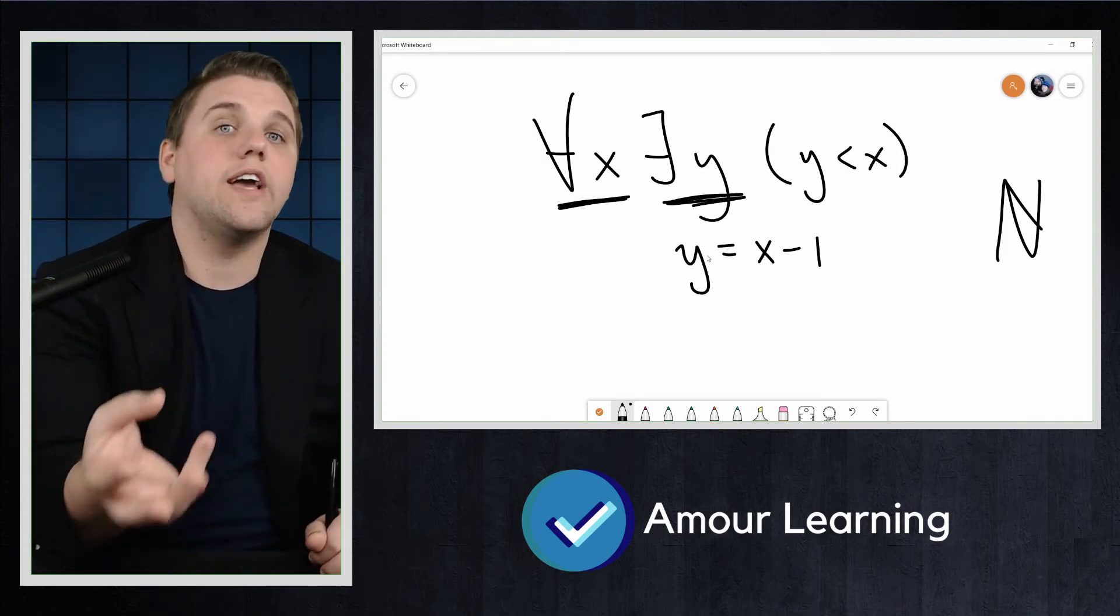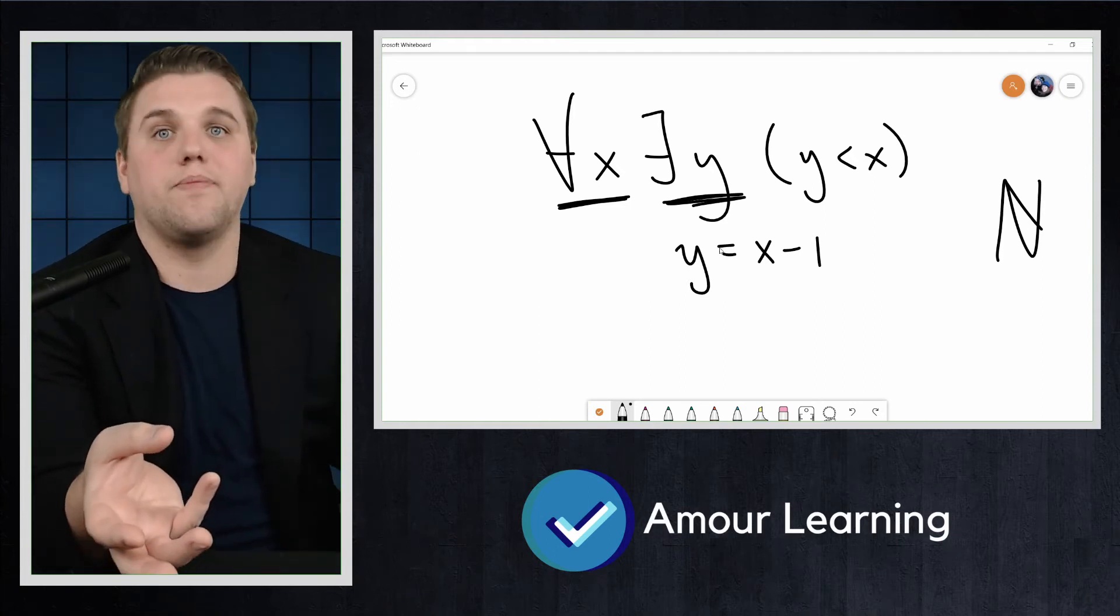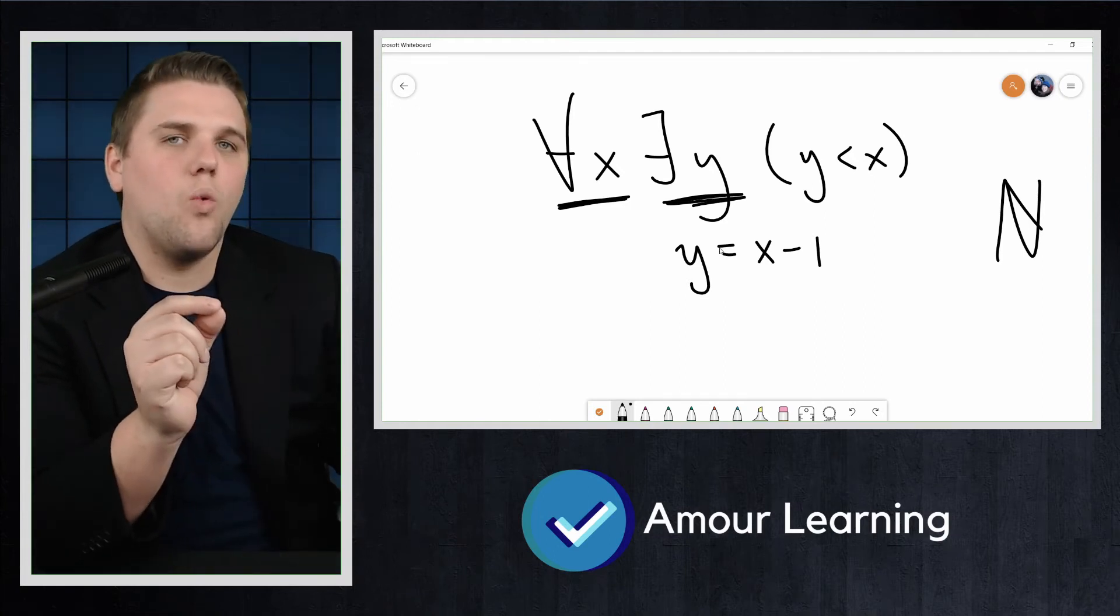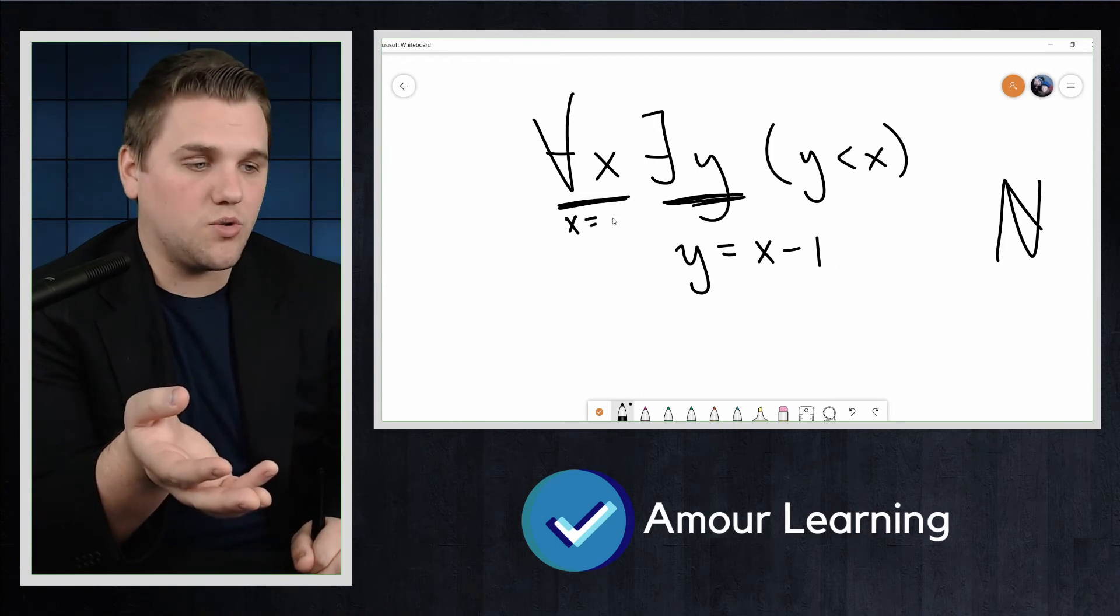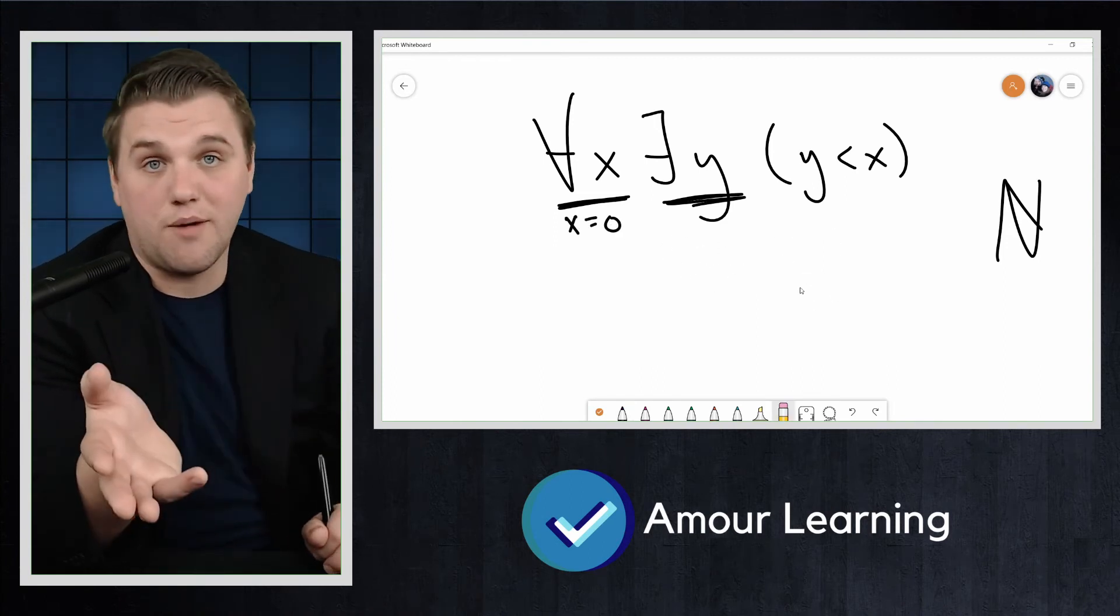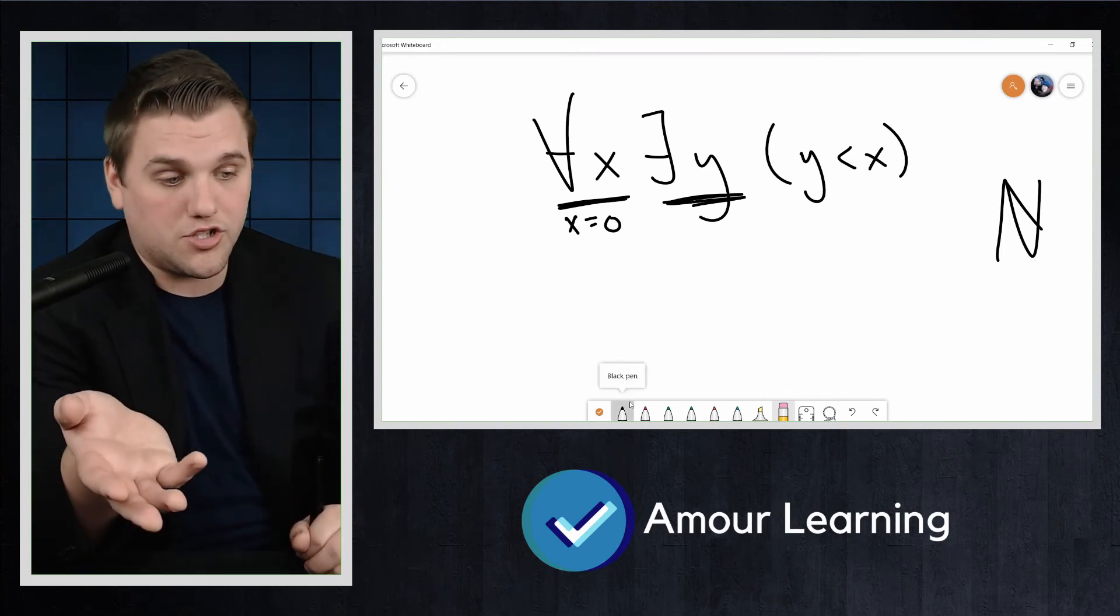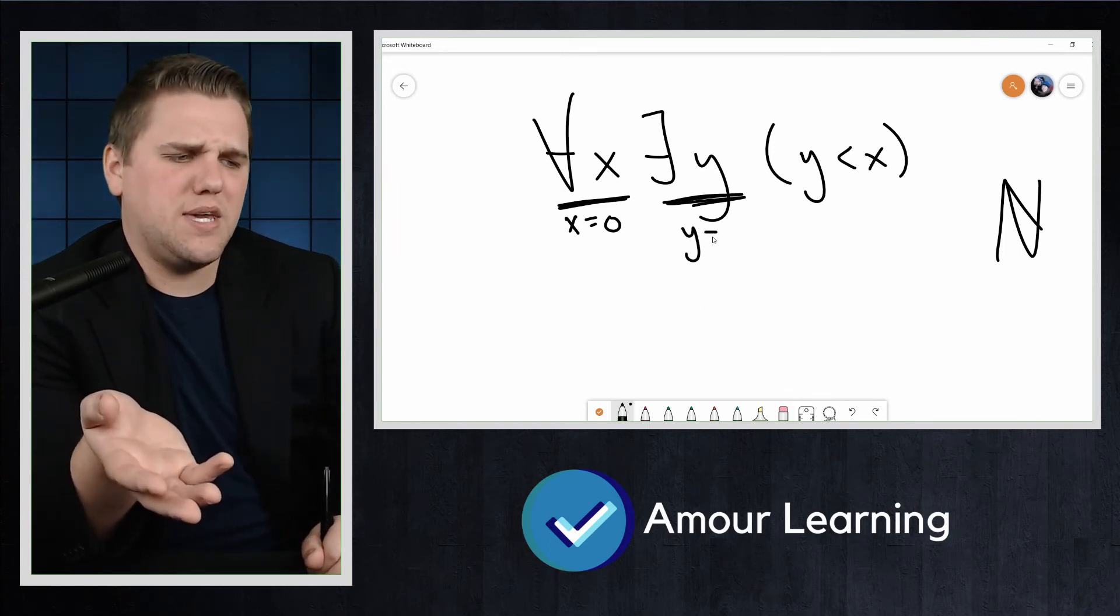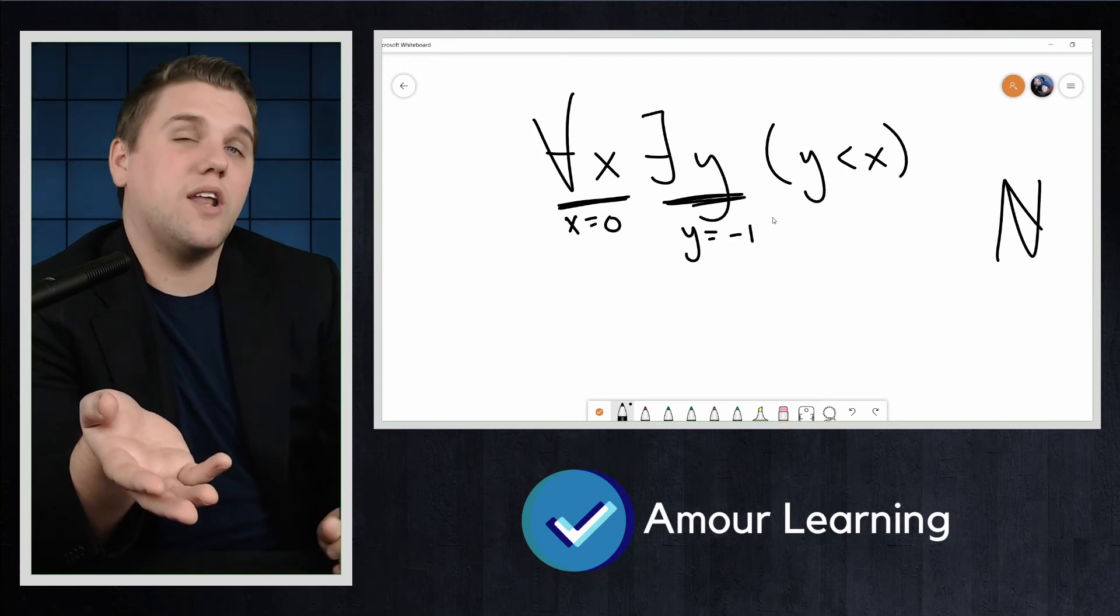which is X minus 1, is going to be less than that number. But here's the problem. What about X equals 0? What if you give me X equals 0? The statement should work for all X that it's a natural number, and 0 is a natural number. So I would pick Y to be X minus 1, which is negative 1.